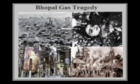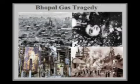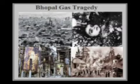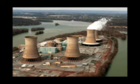On the night of 2nd December 1984, the Union Carbide pesticide plant in Bhopal began to leak methyl isocyanate gas and other poisonous toxins into the atmosphere. Over 500,000 people were exposed and more than 15,000 died. This disaster is also known as the Bhopal Gas Tragedy.